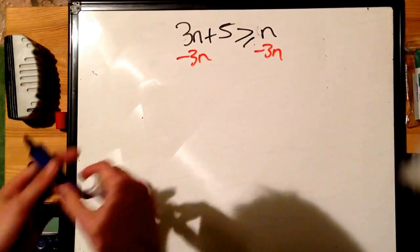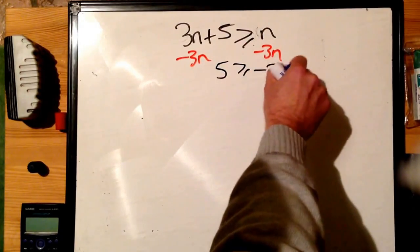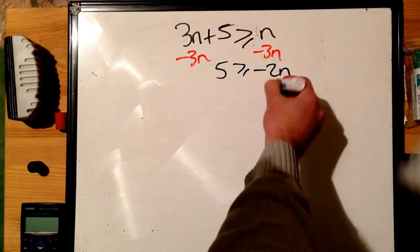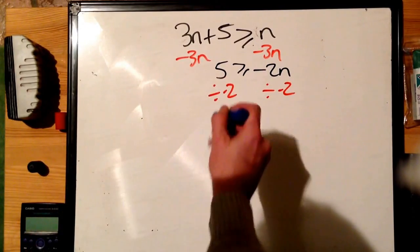So it looks like this, and we end up with 5 is bigger than or equal to n take away 3n, which is minus 2n. The next thing they would do is divide by minus 2. Nothing wrong with that: minus 5 over 2.